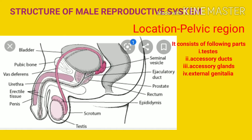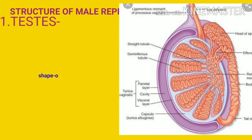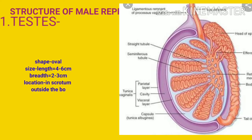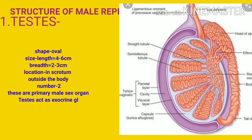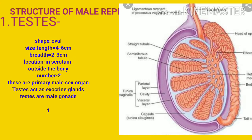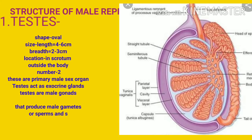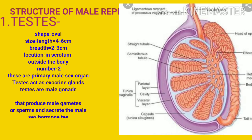The four main parts are: 1. Testes, 2. Accessory duct, 3. Accessory gland, 4. External genitalia. Testes are the primary male sex organs because they are present since birth. Their shape is oval. The length of testes is 4-6 cm and breadth 2-3 cm. They are located in the scrotum outside the body and are two in number.